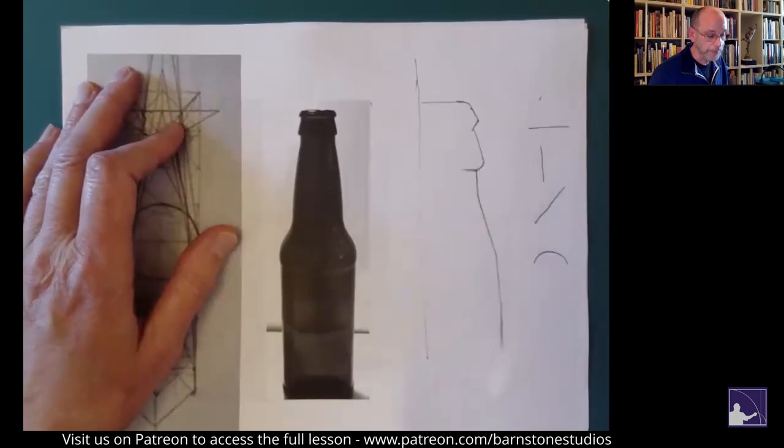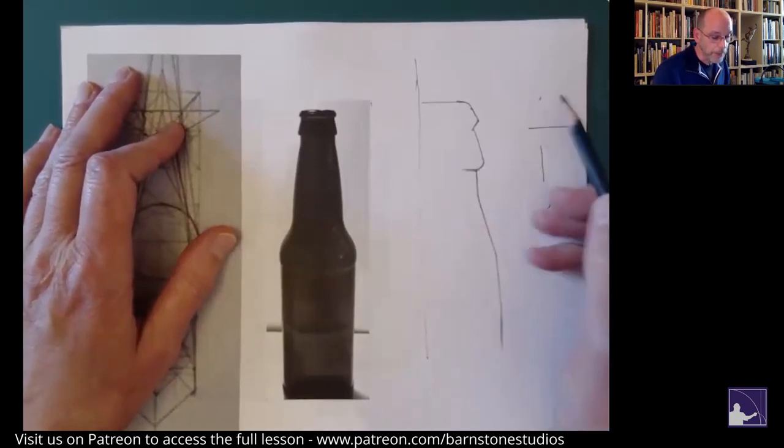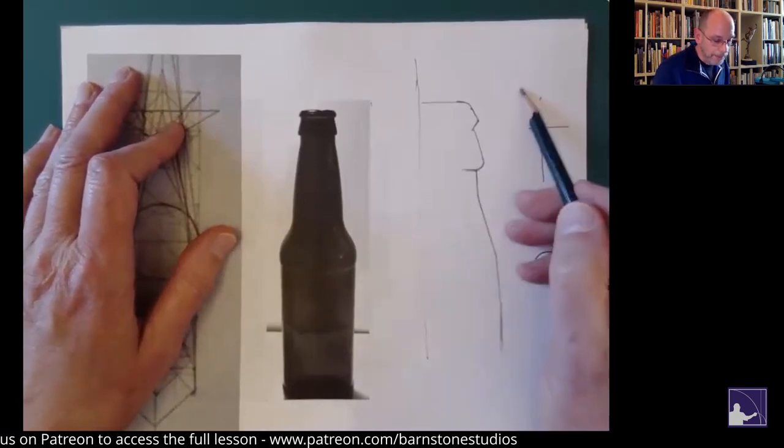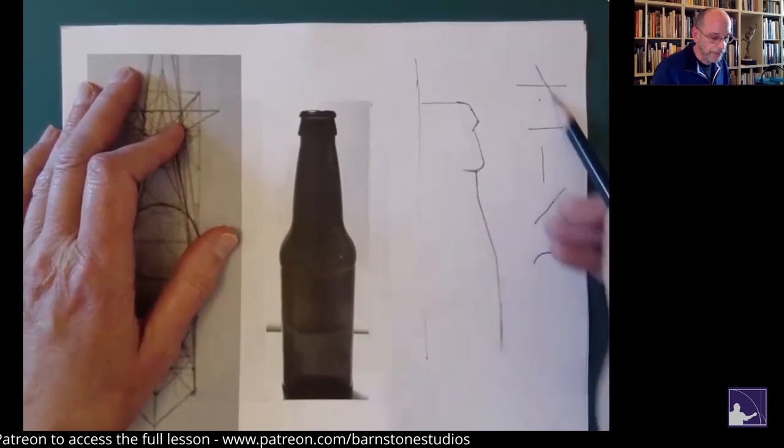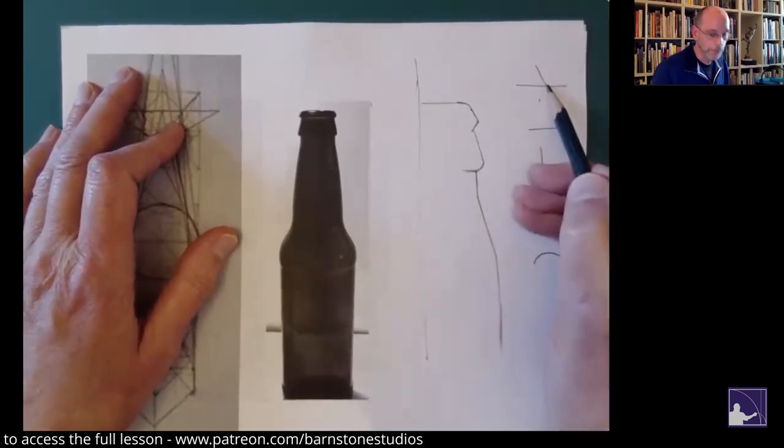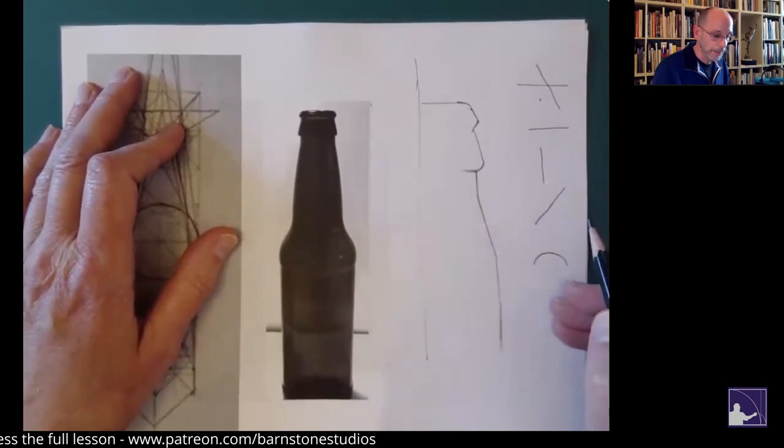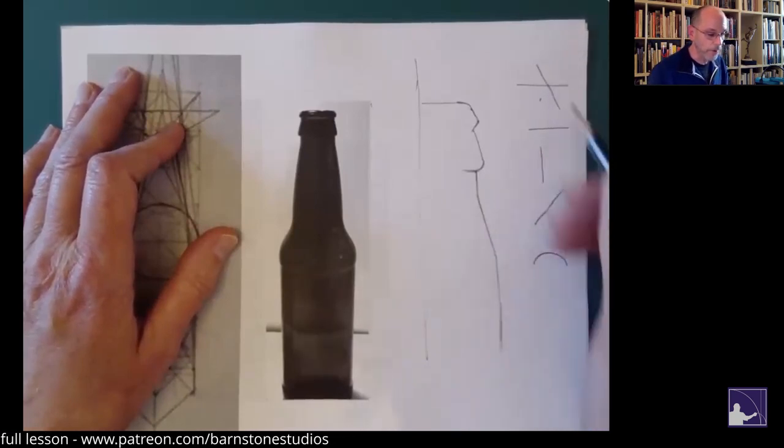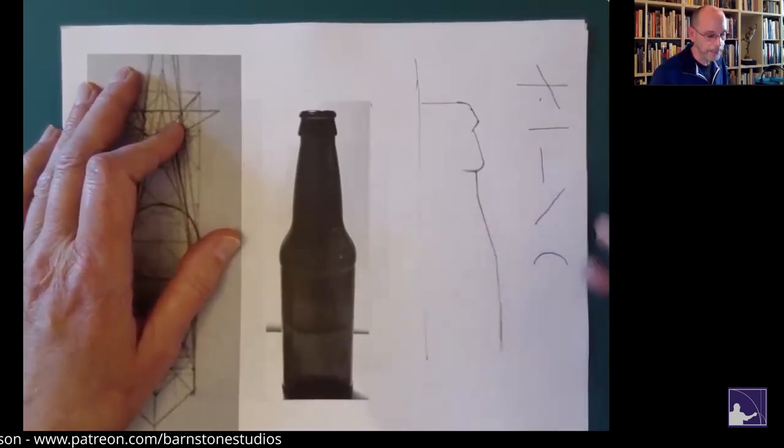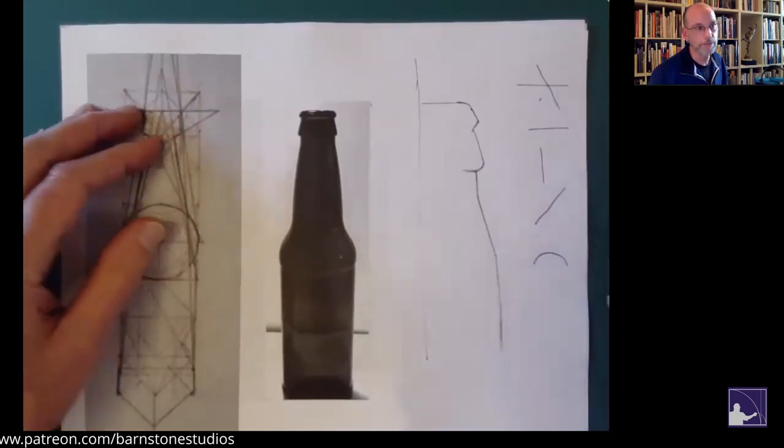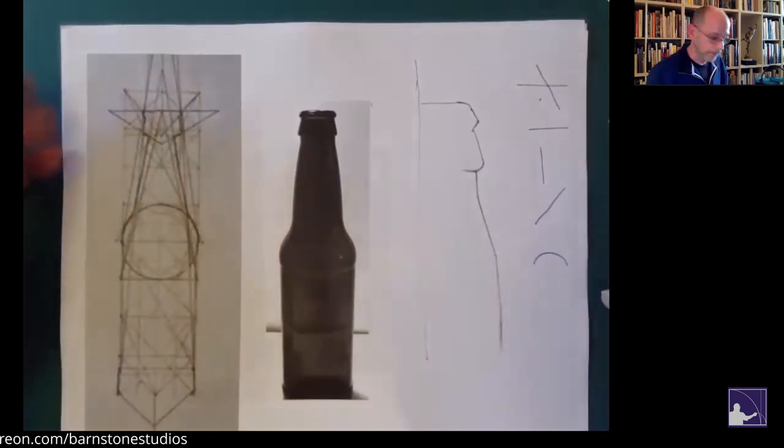When one line meets up with another, where they cross, that is the point, that's the intersection. So you're going to find intersections wherever lines cross, and they become the starting point for all kinds of coincidences that you could see in the design.